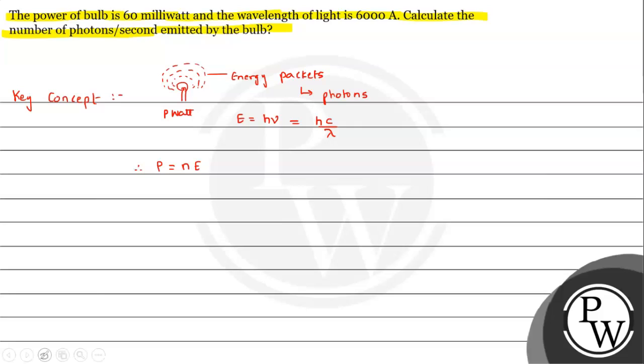Using this expression, we'll analyze the given question. The power is given, the wavelength is given, and we need to calculate the number of photons emitted per second.